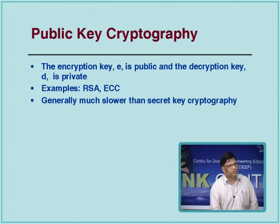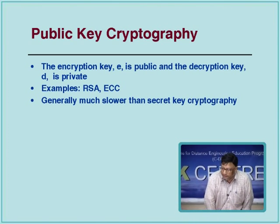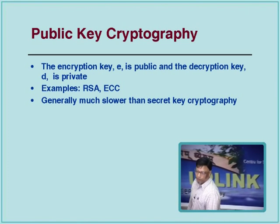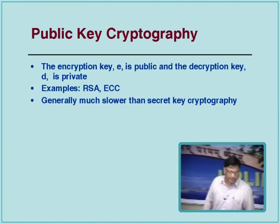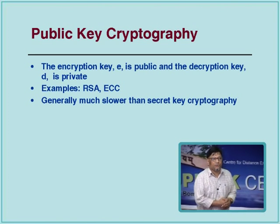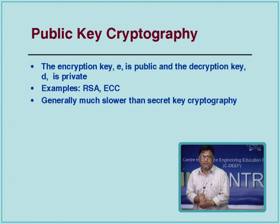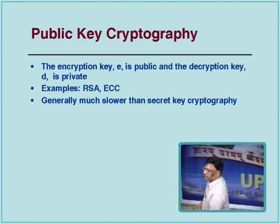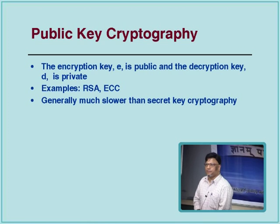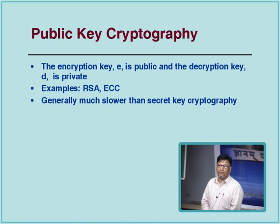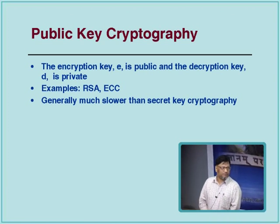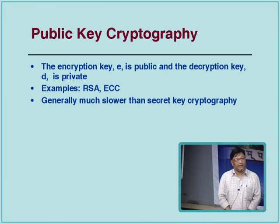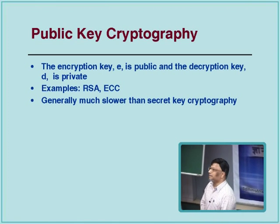In public key cryptography, the two keys are distinct but mathematically related — knowing one, you cannot deduce the other. The symbol e refers to the public key (encryption key), known to everyone, and d is the private decryption key, kept secure. The question is how to keep the private key secure.